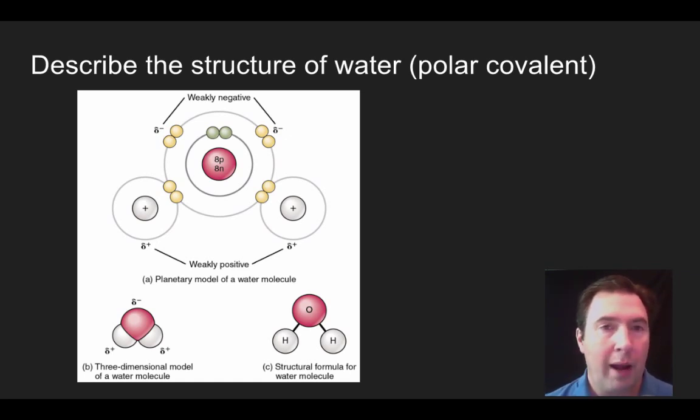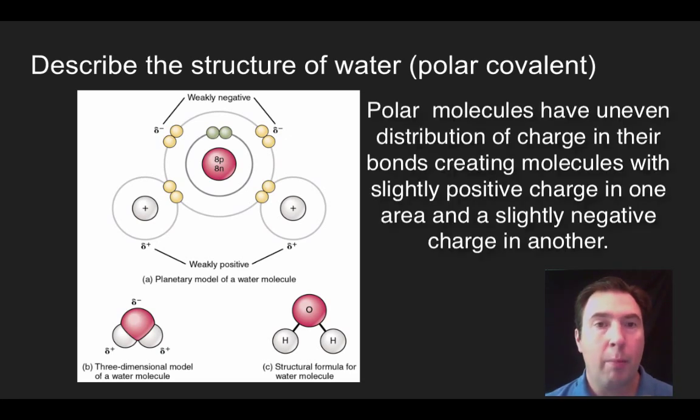And so as a result, what happens here is that the oxygen becomes slightly more negative and the hydrogens become slightly positive. This creates a directionality to water where there is a slight negative end and a slight positive end. This is what we call polarity.